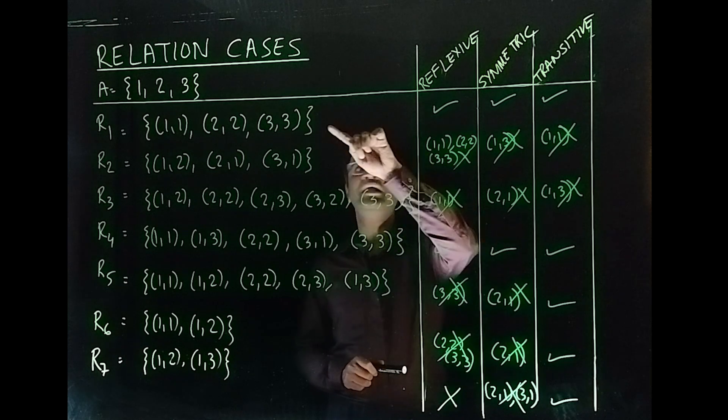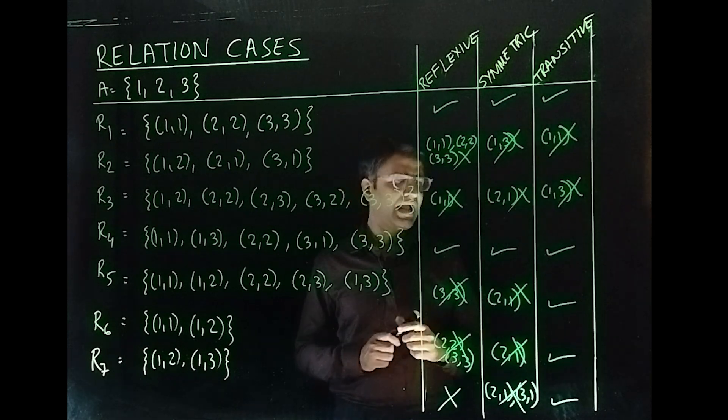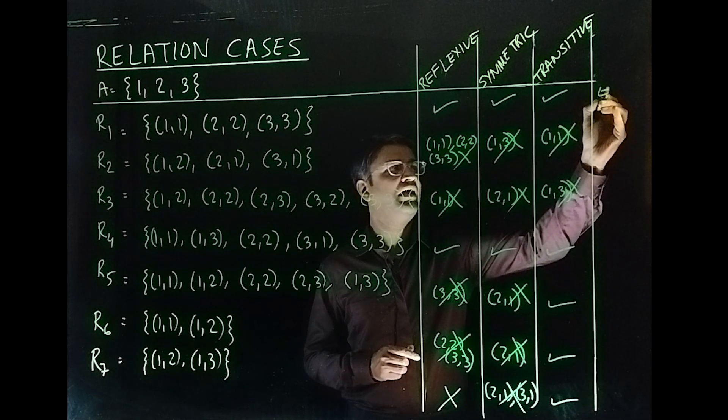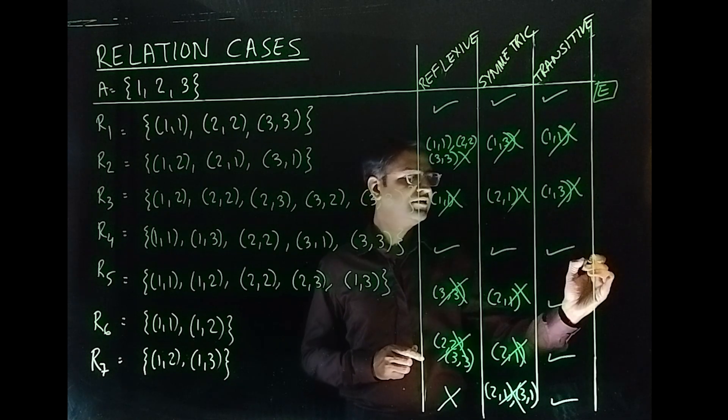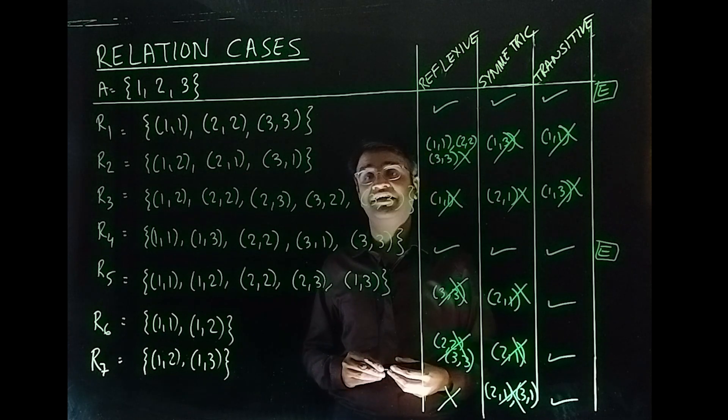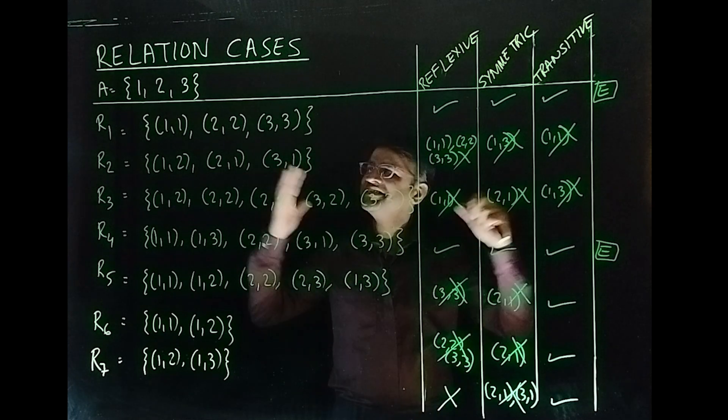So by this we can understand only R₁ and R₄ are actually equivalence. That means it is reflexive, symmetric and transitive.